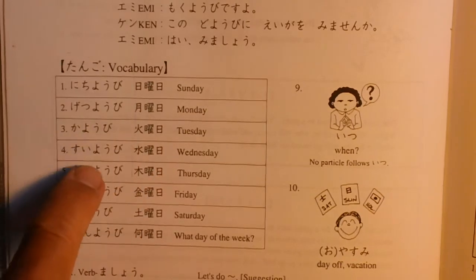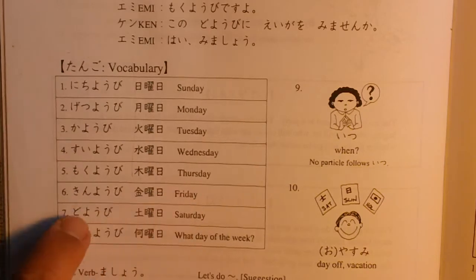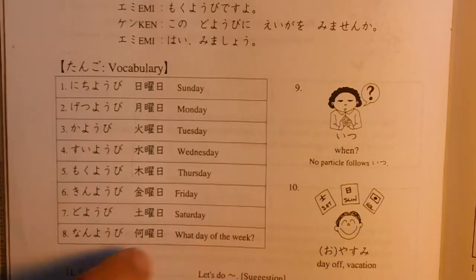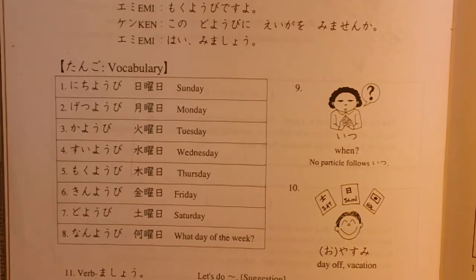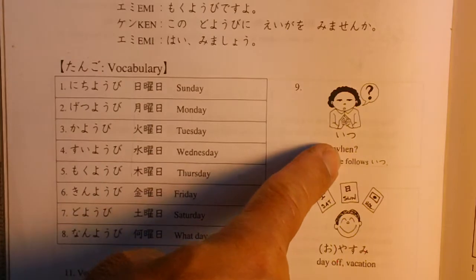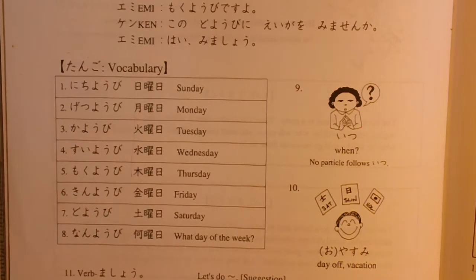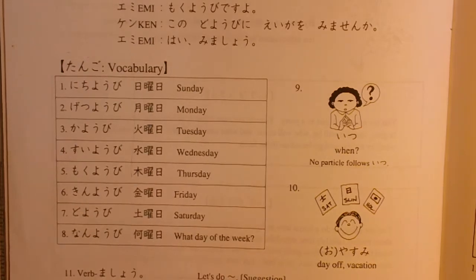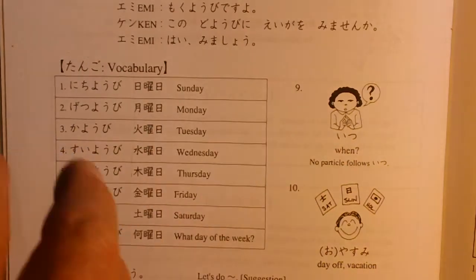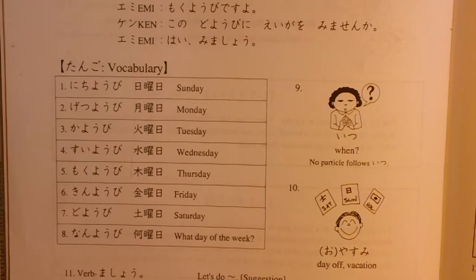今日は何曜日ですか? — What day of the week is it today? 今日は月曜日です。— Today is Monday. Now, いつ? いつ? — When? いつばんごはんを食べますか? — When do you eat dinner? You're going to learn time — six o'clock, seven o'clock, nine o'clock — later, but いつ is the bigger 'when' word. 木曜日、水曜日、月曜日 — you can answer with those.